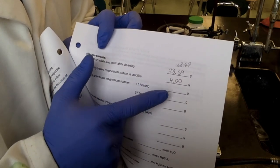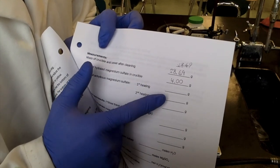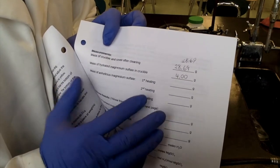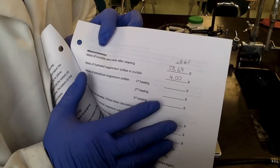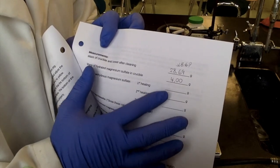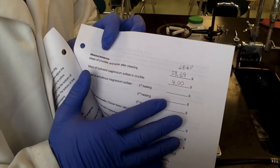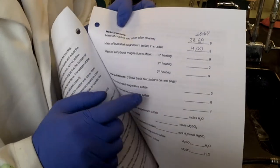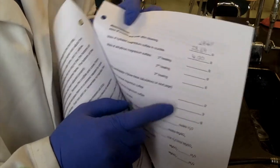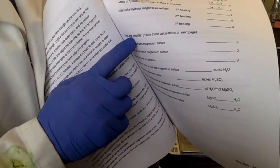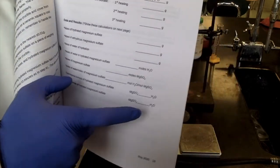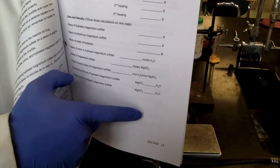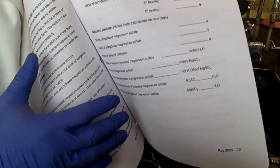And then we'll just have to see if we need a third heating or not. Because if the first and second heatings are relatively similar in mass, then you can forgo the third heating. You've already lost all your mass in the first two things, so you shouldn't have to do a third one. And then from that information, you'll be able to calculate all the data and results for the experiment and see what the final formula is for the hydrated magnesium sulfate.